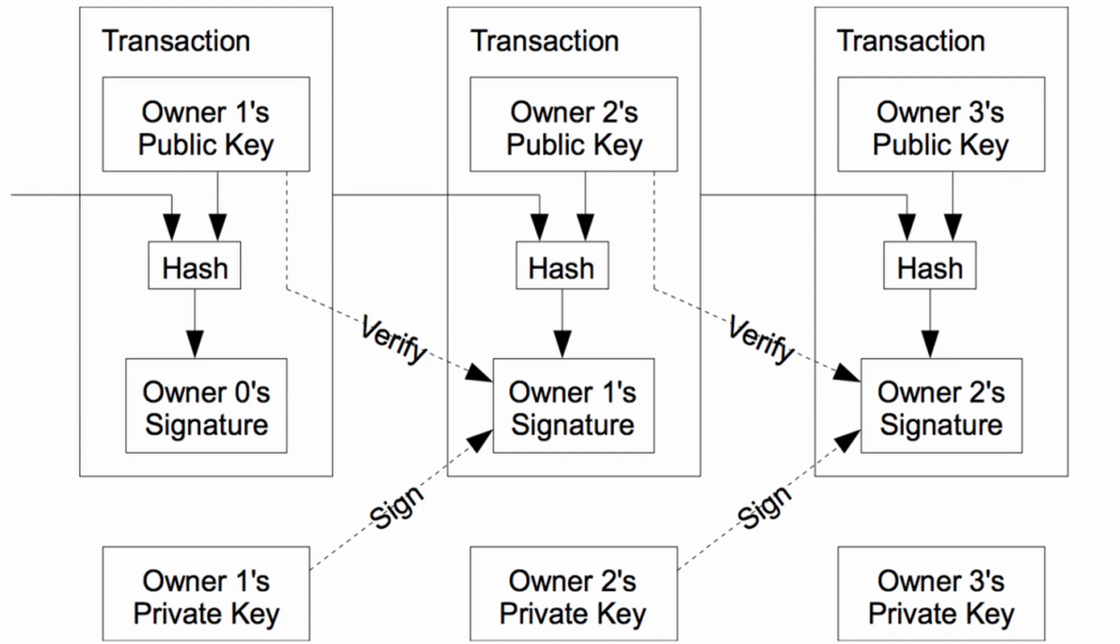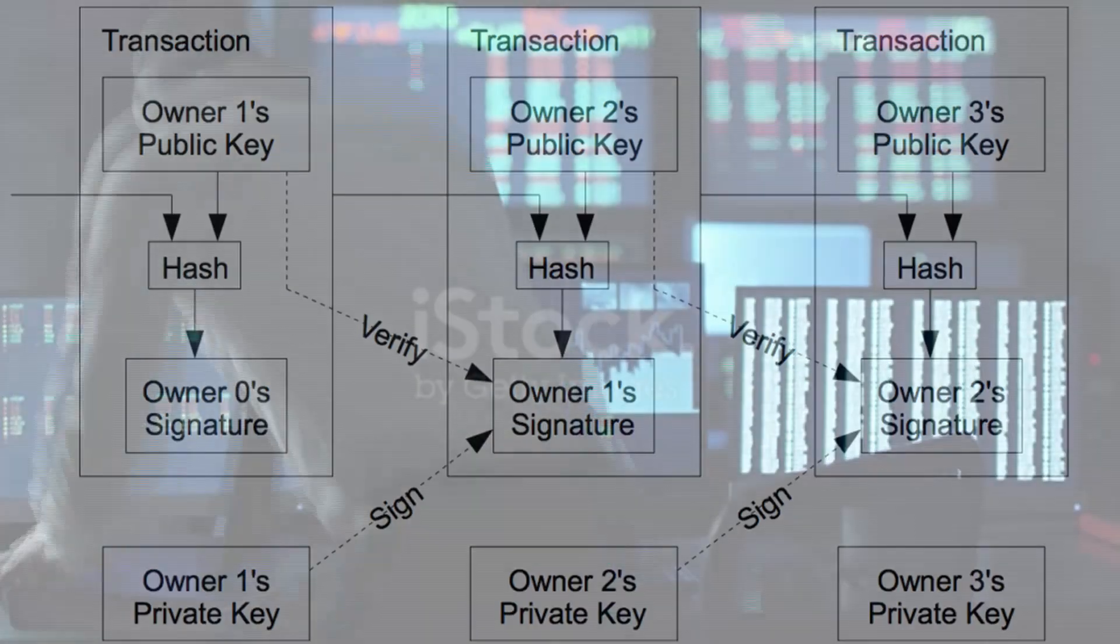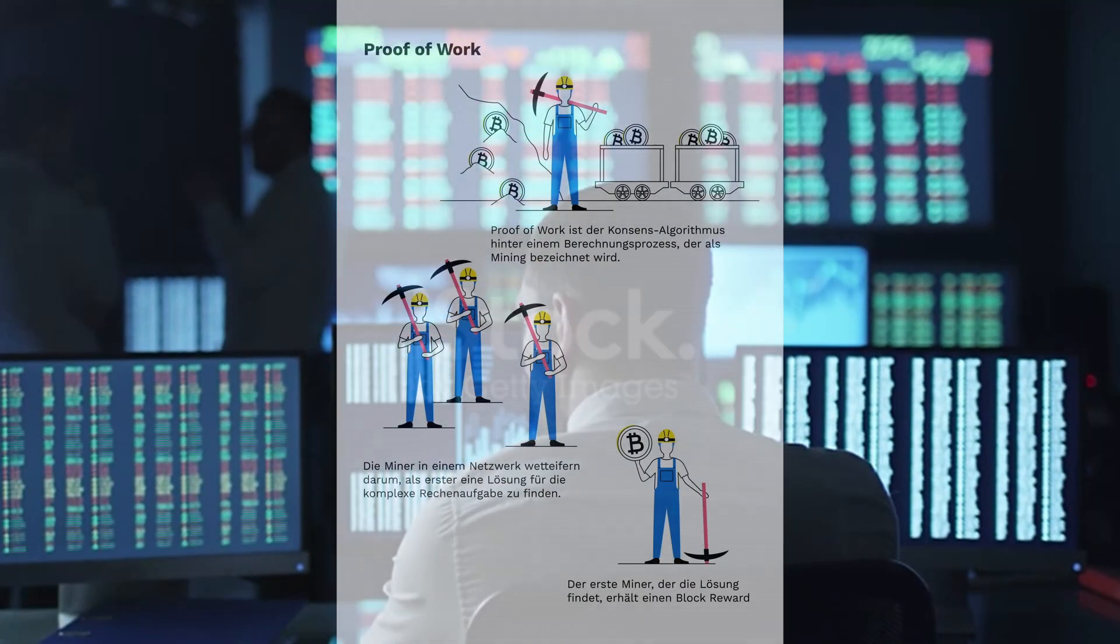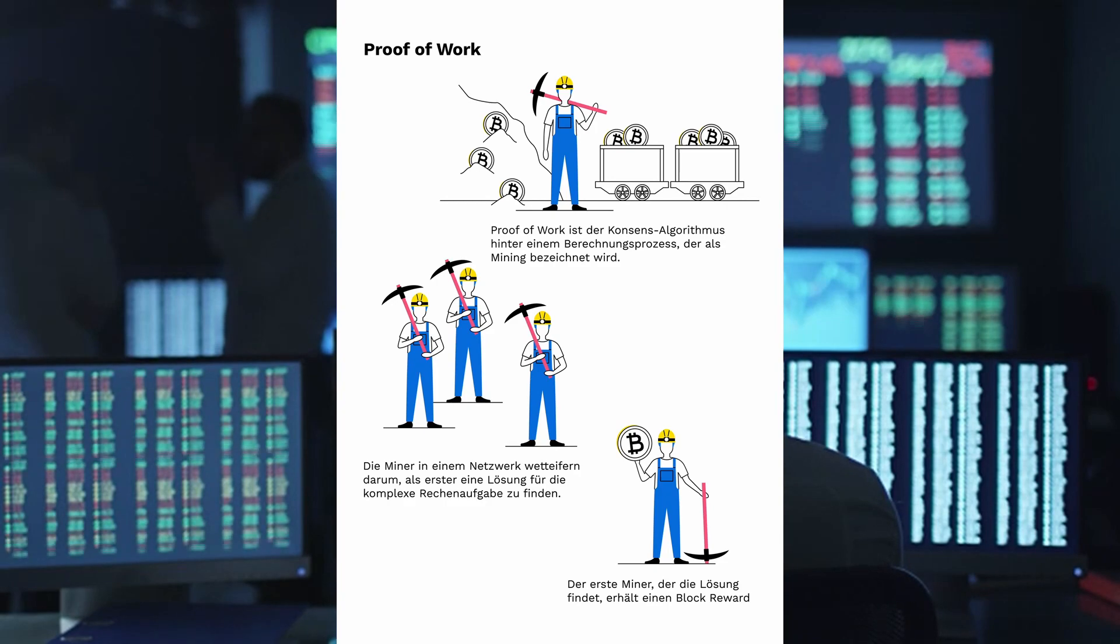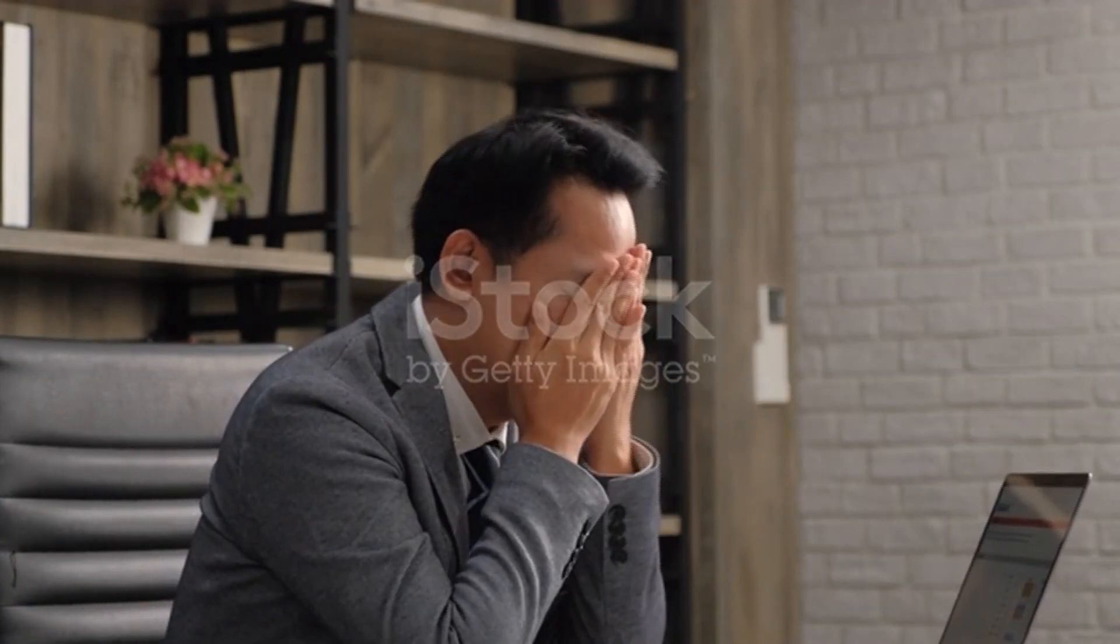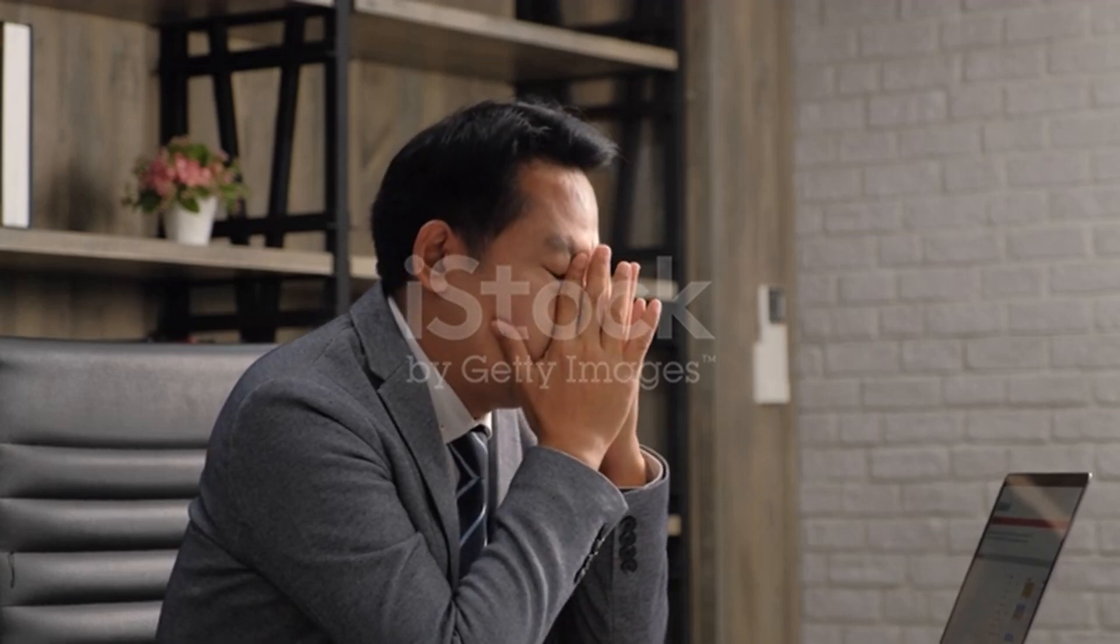To be able to spend their bitcoins, the owner must know the corresponding private key and digitally sign the transactions. The network verifies the signature using the public key. The private key is never revealed. If the private key is lost, the bitcoin network will not recognize any other evidence of ownership, then the coins are unusable and effectively lost.